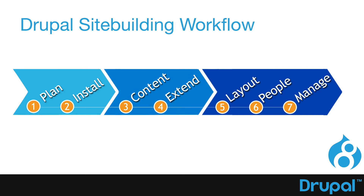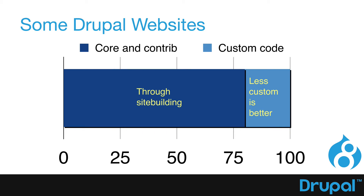We've planned the site for you — I'll talk about that in an upcoming video. We've already installed Drupal and even installed some modules using Drush. The next thing we'll talk about is content. If you've taken any of our earlier training, you've seen this slide before. The vast majority of Drupal websites are built through what's called site building, and that's what this course is for. Core and contrib modules make up the vast majority of what you'll do. About 20% of the average Drupal site might be custom code. Less custom is always better, and honestly, I've built some pretty good Drupal sites without ever using custom code. It just depends on the project.